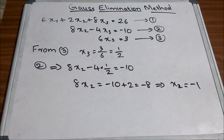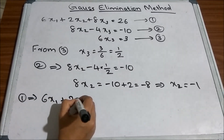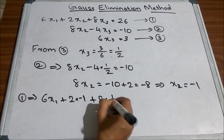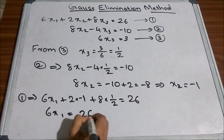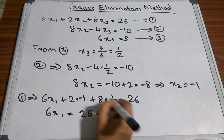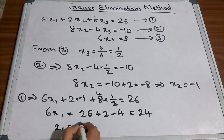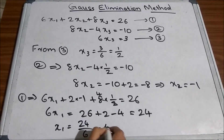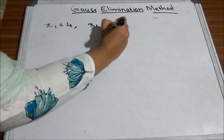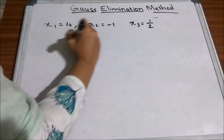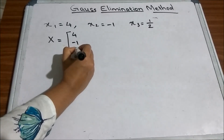Now we substitute x2 = −1 and x3 = 1/2 into equation 1: 6·x1 + 2·(−1) + 8·(1/2) = 26, giving 6·x1 − 2 + 4 = 26, so 6·x1 = 24, and x1 = 4. The solution is x1 = 4, x2 = −1, x3 = 1/2, which can be written as x = [4, −1, 1/2].